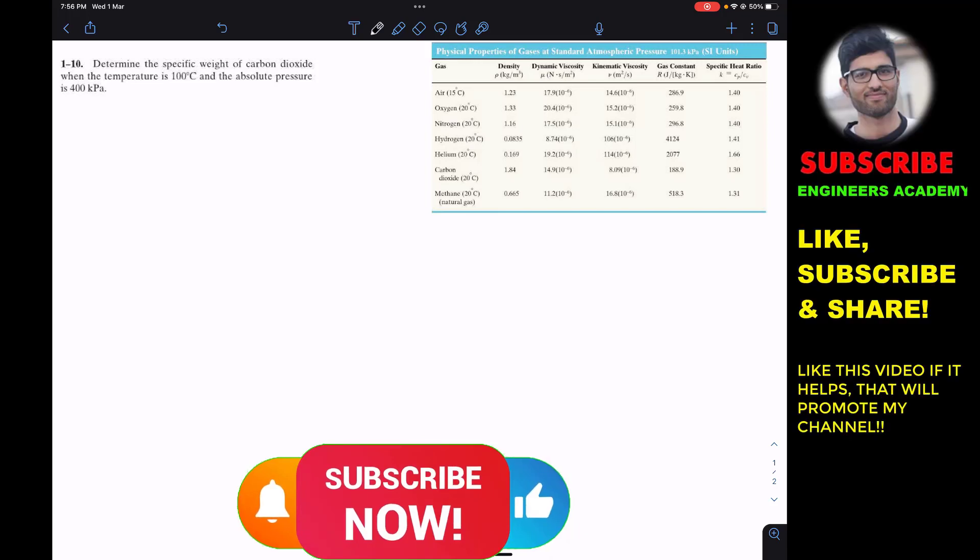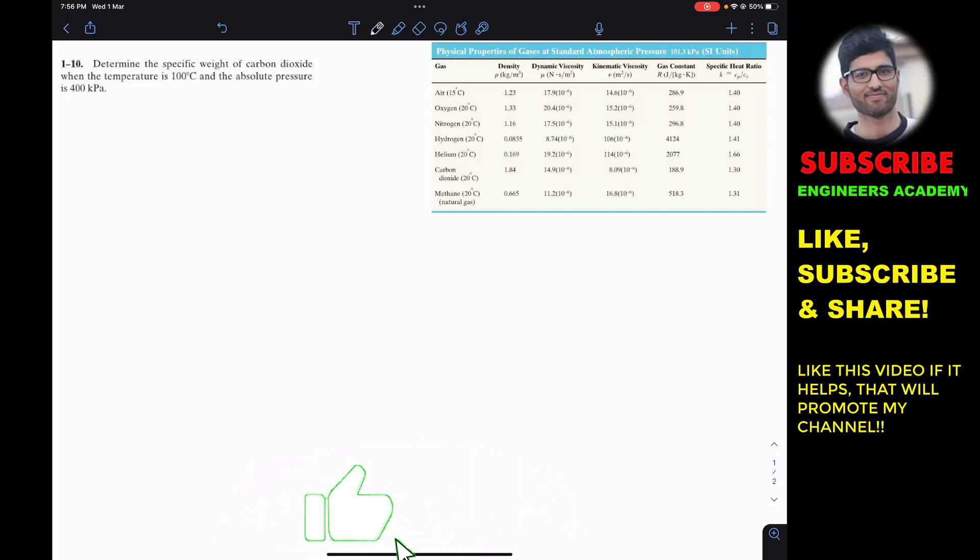Hello guys, I welcome you all to my channel Engineers Academy. Today we are going to solve one another problem from fluid mechanics by Hibbeler. The problem says: determine the specific weight of carbon dioxide when the temperature is 100 degrees C and the absolute pressure is 400 kilopascal.